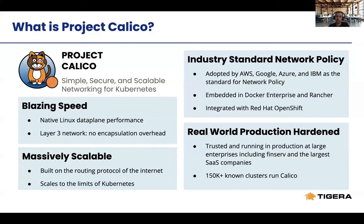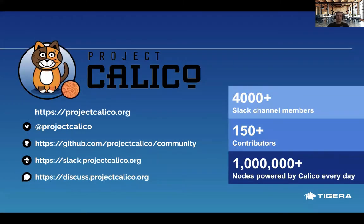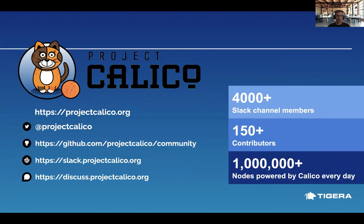Calico is also available in package distributions such as Docker Enterprise, Rancher, OpenShift, and VMware Tanzu. As of today we know of over 150,000 clusters running Calico — either open source or Calico Enterprise, our commercial offering. If you're interested or need help, I encourage you to join the Slack channel, which has over 4,000 active members. The project is hosted on GitHub under the Project Calico account, and you can join over 150 developers actively contributing to it.